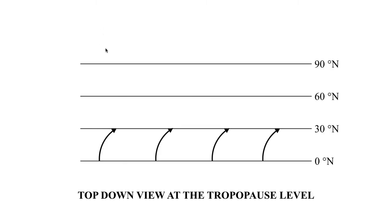Hopefully this diagram looks familiar. This is what we introduced when we were talking about the Hadley circulation. You may remember we have this wind that's blowing from the equator — this is at the tropopause level, aloft, not near ground level. We have this air that's blowing from equatorward poleward, which in the northern hemisphere that would be from south to north, and then it undergoes a Coriolis deflection as it's trying to go northward. So you have this air that's all trying to go towards the east.